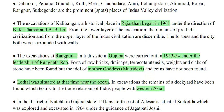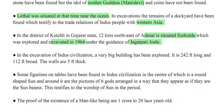In the district of Kutch in Gujarat state, 12 km northeast of Adesar, lies Surkodha, which was explored and excavated in 1964 under the guidance of Jagatpati Joshi. In the excavation of Indus civilization, a very big building was found — 252 feet long and 112 feet broad, with walls 5 feet thick. Some figurines on tablets show a round-shaped sun in the center with six gods arranged like sunbeams, testifying to sun worship of that period.